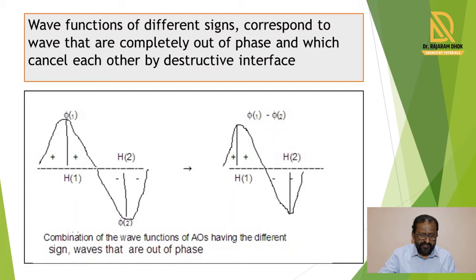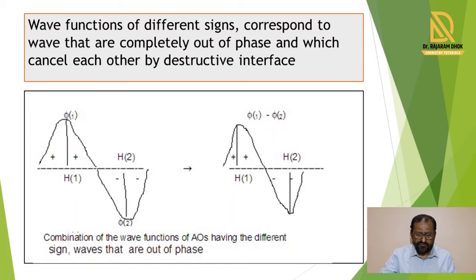In the second diagram, there is one peak above the Cartesian axis, but the other atomic orbital has an opposite wave function — phi2 is negative. So its wave function is different from phi1 and is shown below the Cartesian axis. When these two wave functions of different signs combine, there is no addition; instead there is destruction or repulsion. The resulting molecular orbital shows one lobe above the plane and one below the plane, and such a type of molecular orbital is called an anti-bonding molecular orbital.